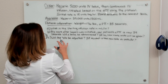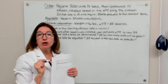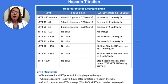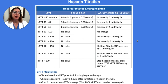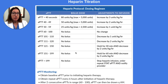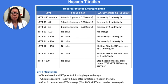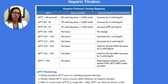Before we get into the first set of questions, let's take a look at our heparin protocol. This is a pretty standard protocol you would see across many hospital systems, though you would want to refer to your facility's policy. With this protocol, we have three columns. The first column is where you look up your patient's APTT level. The second column tells you whether you need to administer a bolus dose, depending on their APTT level.